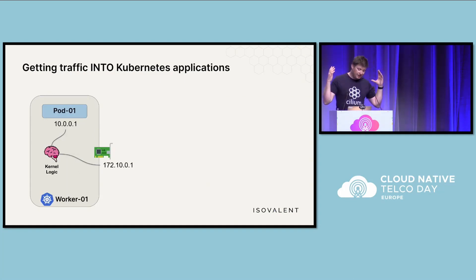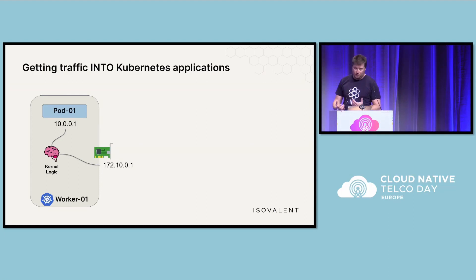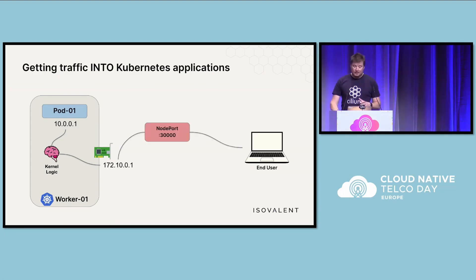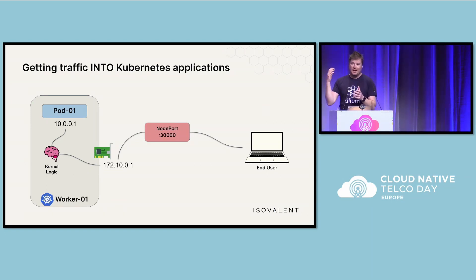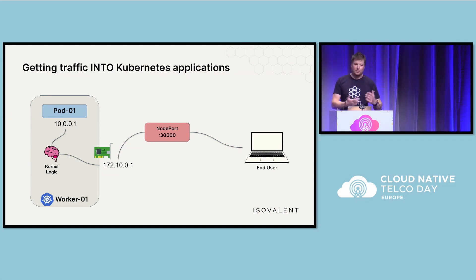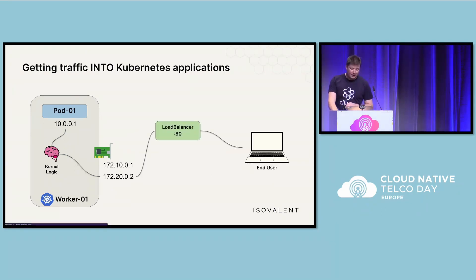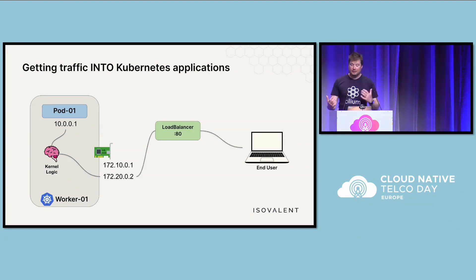So here we have a simple node. We have our pod that's actually running and we have the address of the node itself. The most simplest way you can get traffic into your application is through a node port, which is typically exposing your single application on the node itself. Very simple, but that is very inflexible. You basically have almost a one-to-one mapping with a physical server — not very cloud native.